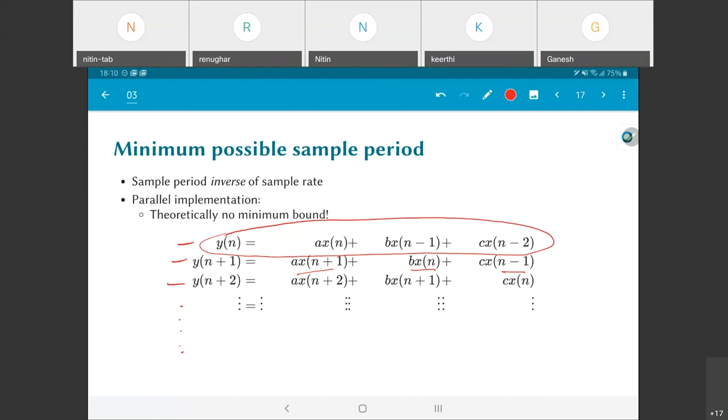This is an interesting concept and we are spending a little time thinking clearly about it. Effectively what we are saying is theoretically there is no minimum bound on the sample interval. Which means that the effective sample rate that can be processed will tend towards infinity because the rate and the period are inverse of each other.